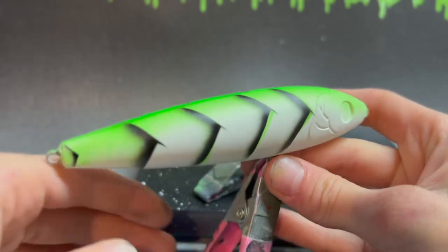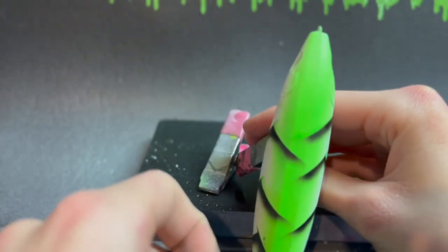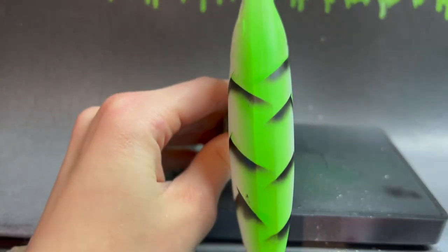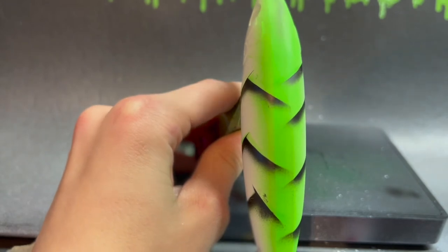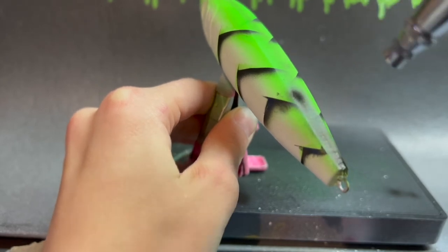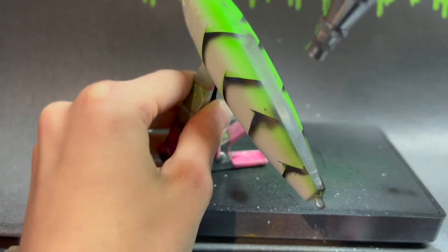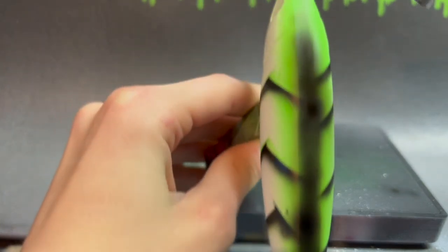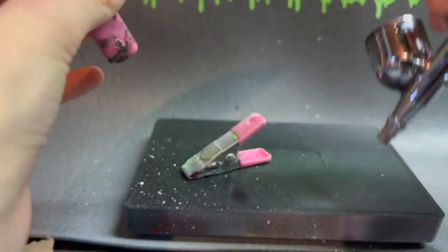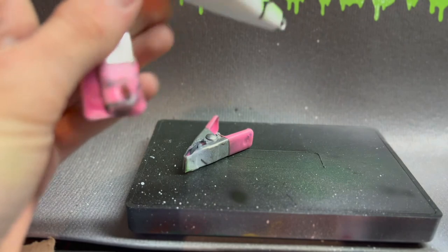Right here is the lure and it is looking awesome right now. But now what we're going to do is make a stripe down the back. And I'm using black. Kind of like that. It gives it that neat look like that. Oh yeah. This is going to be an awesome lure.